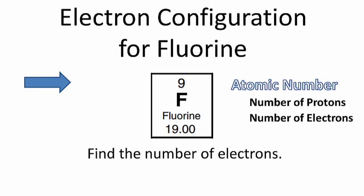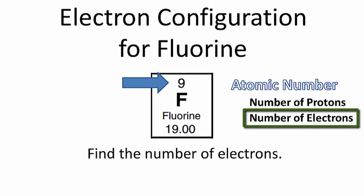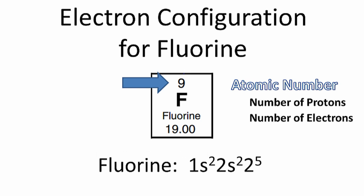To find the electron configuration for fluorine, we first need to look on the periodic table at the atomic number. That's the number above the element symbol. The atomic number is the number of protons, but it's also the number of electrons. And once we know the number of electrons, we can write the electron configuration for fluorine.